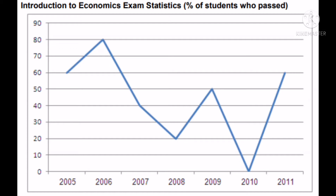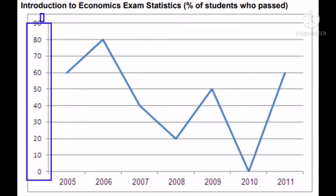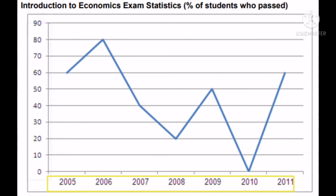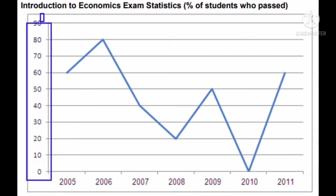This is the percent of students who passed the exam. Take note of the graph — the left side shows the percent of students who passed, while below are the years the exams were taken. The percentages range from 0 to 90%, because not all takers would pass, making a 100% passing rate impossible.